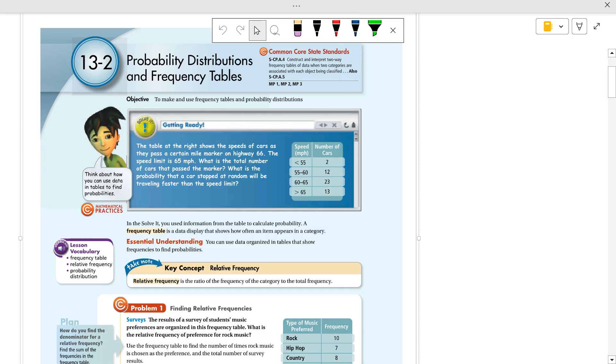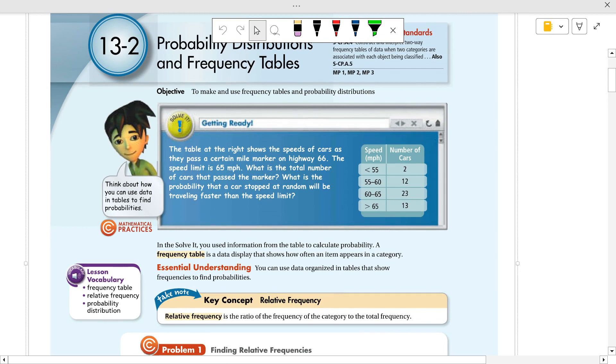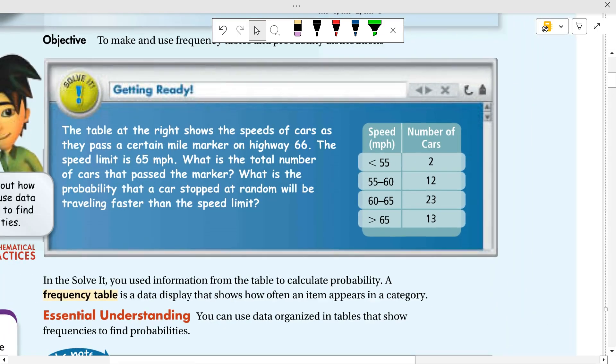Alright, probability distributions and frequency tables. The table at the right shows the speeds of cars as they pass a certain mile marker on Highway 66. The speed limit is 65. What is the total number of cars that pass the marker?